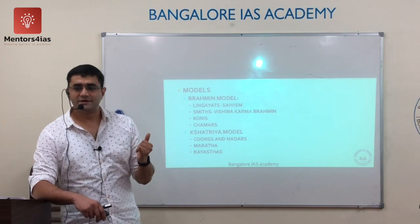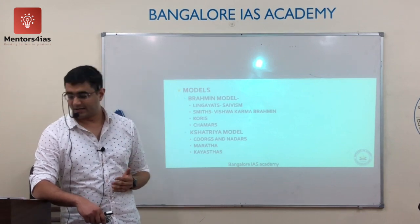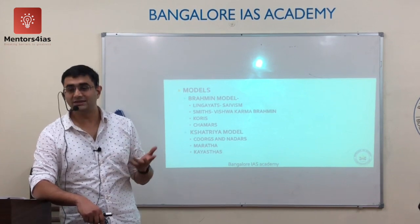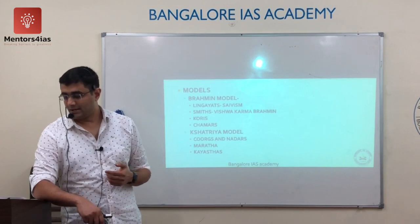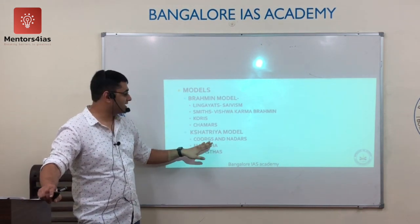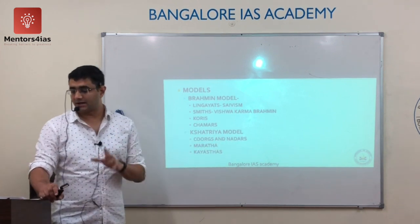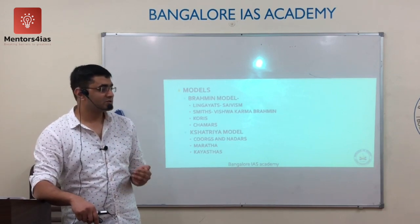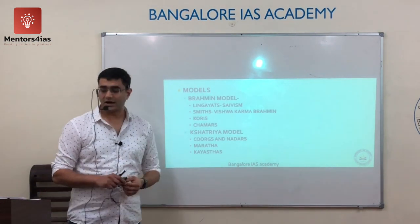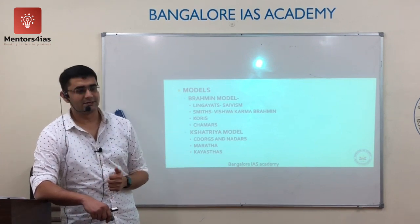The Kshatriya model includes wearing the sacred thread, limited non-vegetarianism, shift in occupation, banning widow remarriage, change in dressing pattern, adopting pompous living, worshipping Vedic deities, and learning martial skills. Examples include the Coorgs and Nadars of South India, the Marathas — who were originally Shudras but adopted Kshatriya ways during Shivaji's time — and the Kayasthas of UP who followed Kshatriyas and claimed themselves as Kshatriyas.